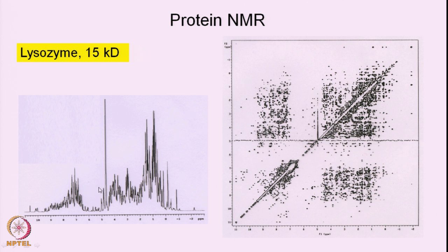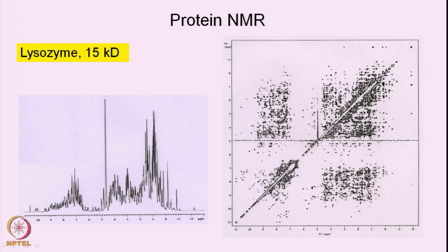To circumvent such problems we record a two-dimensional spectrum — this is the so-called two-dimensional NOSY spectrum, which we have discussed earlier. But look here: this has thousands of peaks reflecting correlations between various protons which are close in space, less than 5 angstroms. The intensities depend upon distance. However, this spectrum is also extremely complicated with so much overlap of cross peaks that it is almost impossible to identify peaks as belonging to individual protons in the protein.